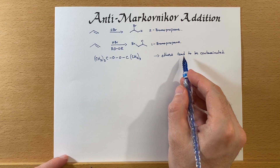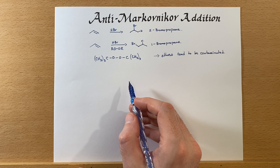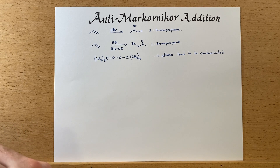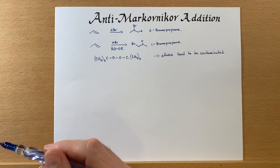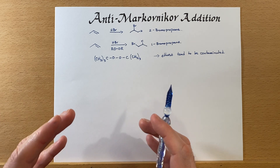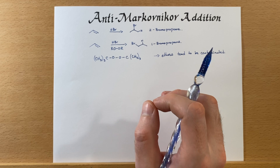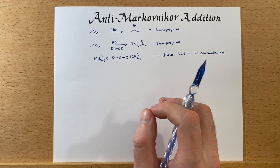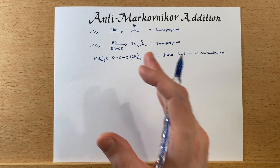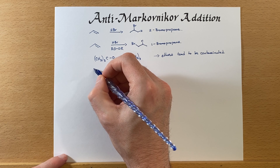Ethers can tend to be contaminated with peroxides because they can form peroxides on exposure to oxygen, and that has its own problems. Organic peroxides tend to be explosive. So as a side note, if you ever see a bottle of ether that looks old and has some crusty material on it, do not touch that bottle. You need a special disposal team at that point. This is also another reason to label when you receive the bottle and when you first opened it.